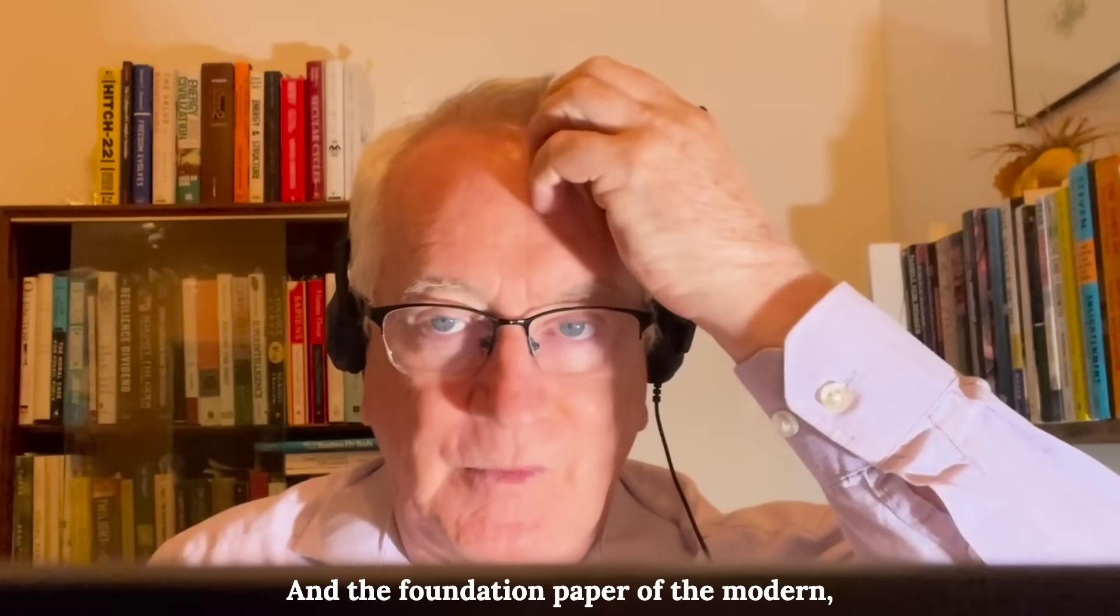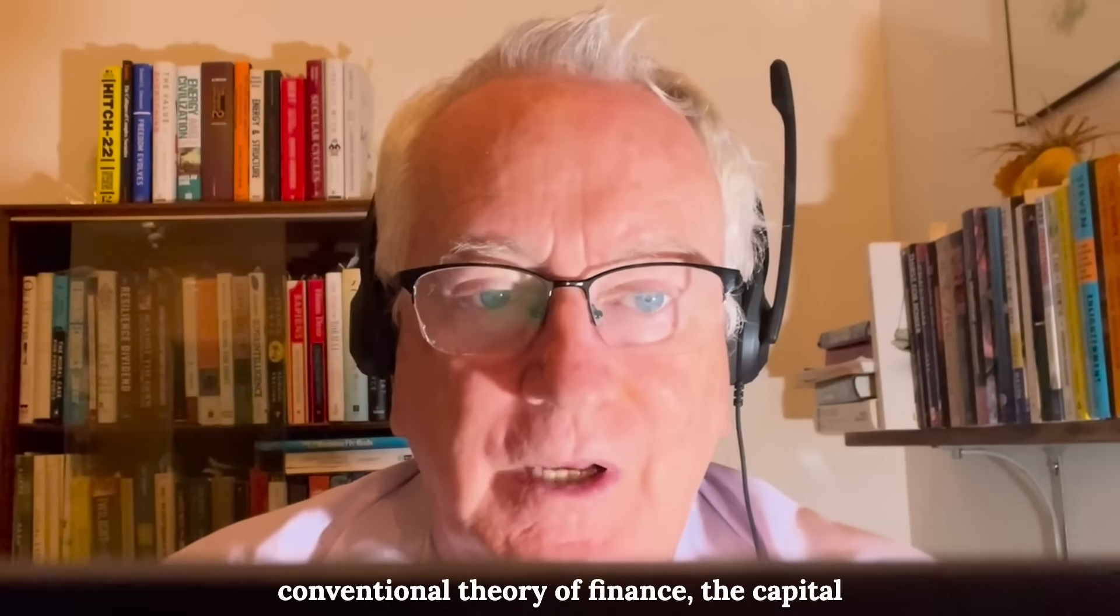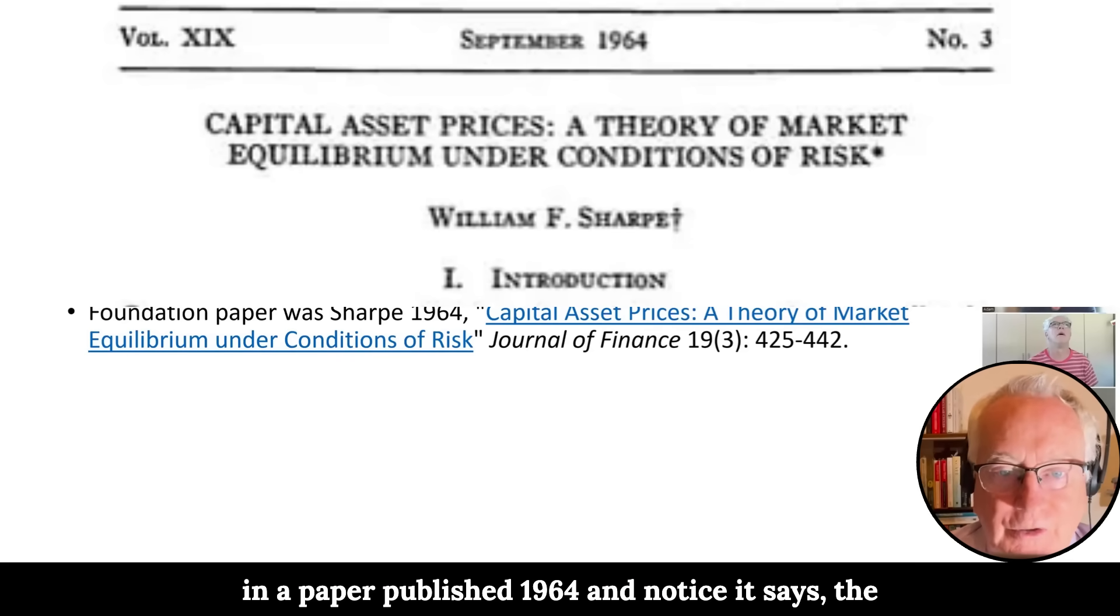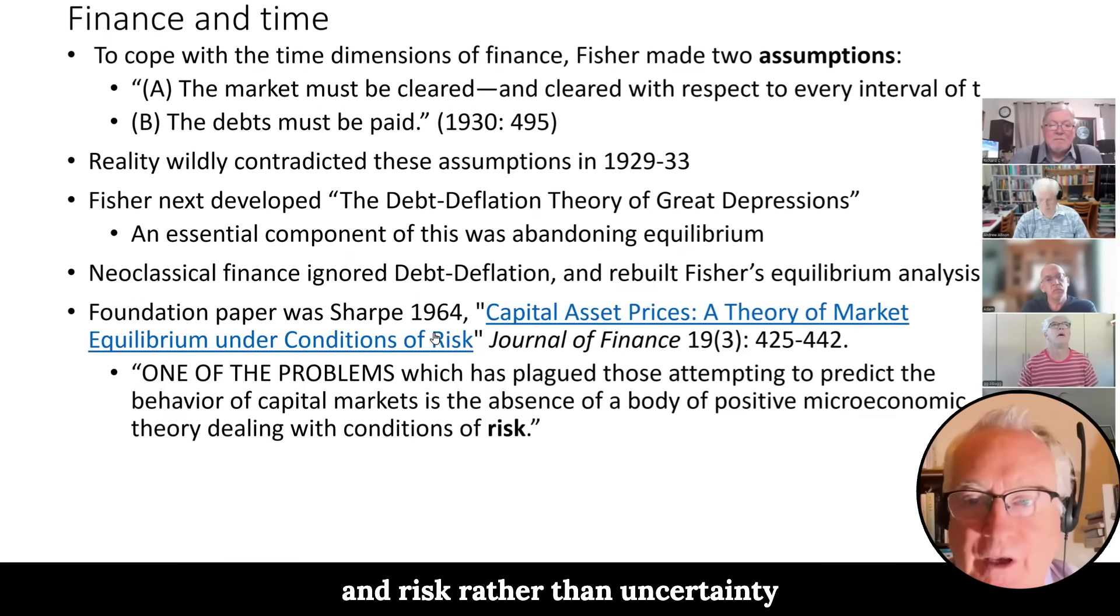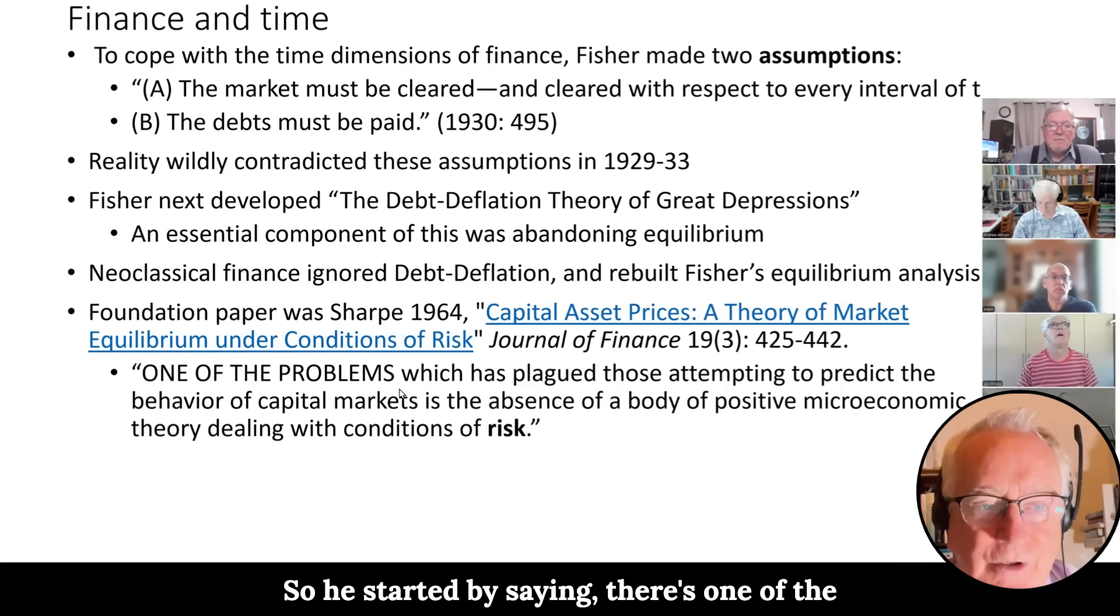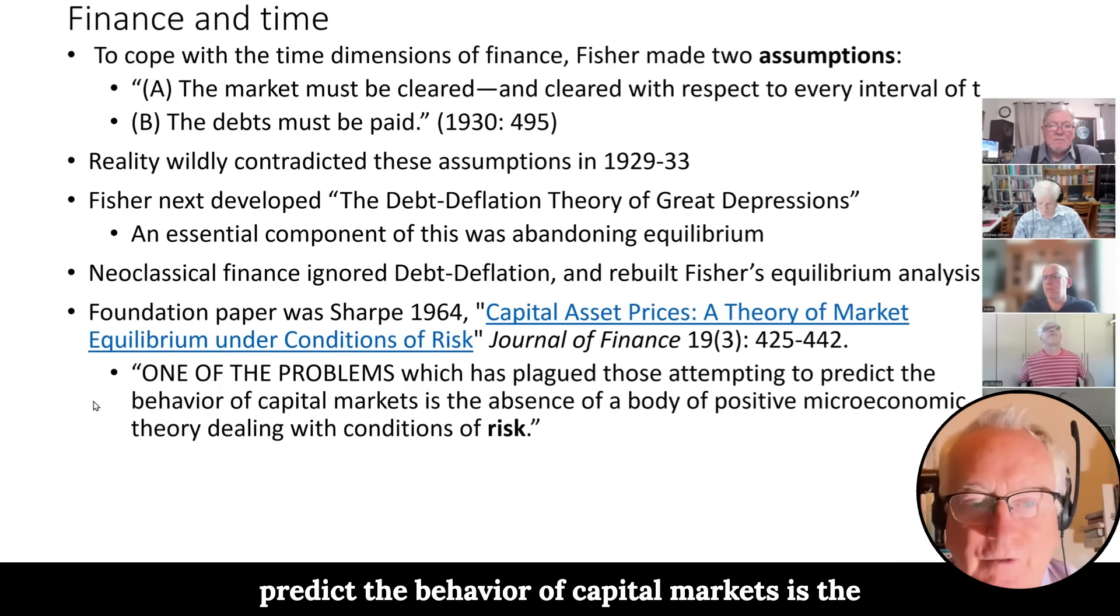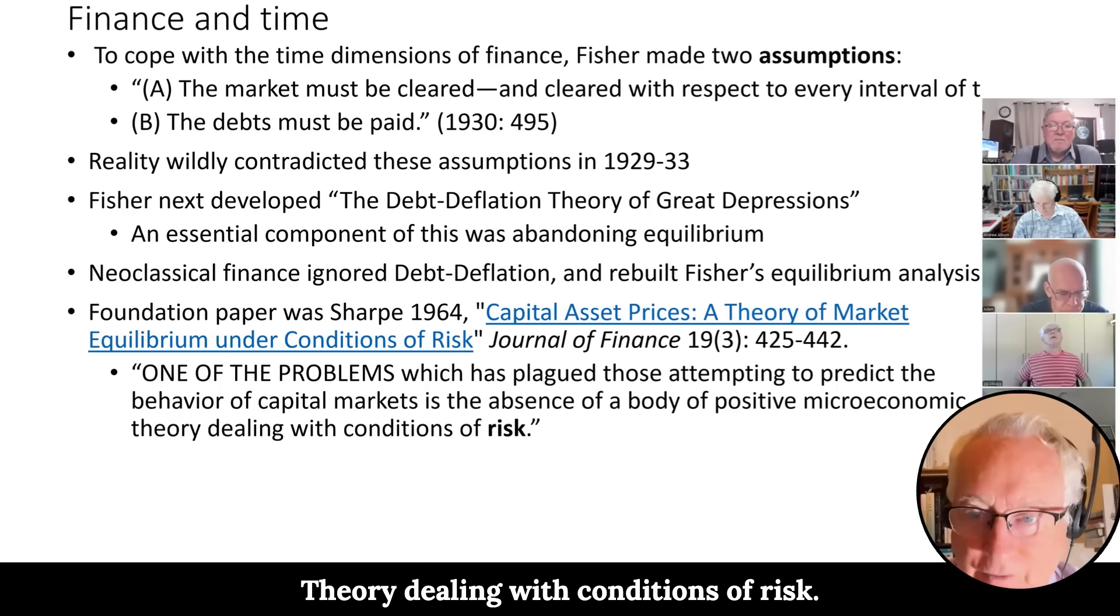And the foundation paper of the modern, no, no, I hate to call it modern, but the conventional theory of finance, the capital asset pricing model was given by Sharpe in a paper published in 1964. And notice it says the theory of market equilibrium under conditions of risk. So the market reaching equilibrium and risk rather than uncertainty determining the volatility of shares. So he started by saying there's one of the problems that's plagued those attempting to predict the behavior of capital markets is the absence of a body of positive pro-economic theory dealing with conditions of risk.